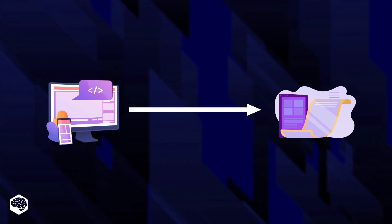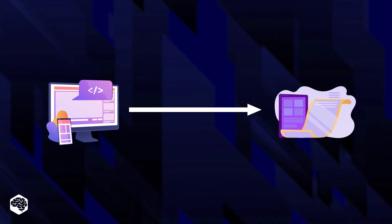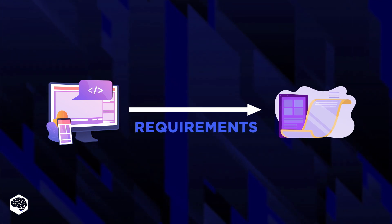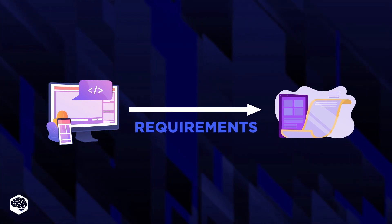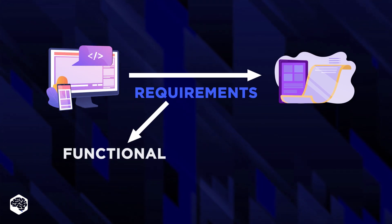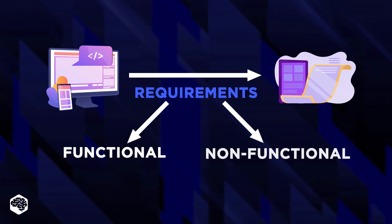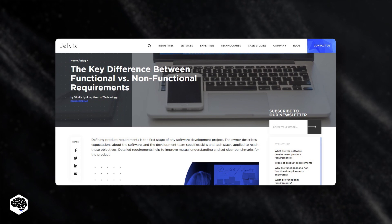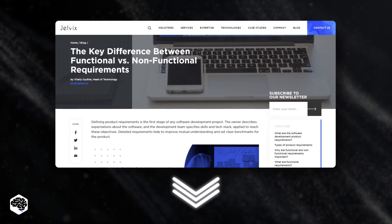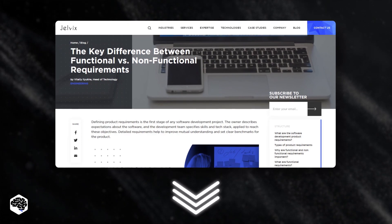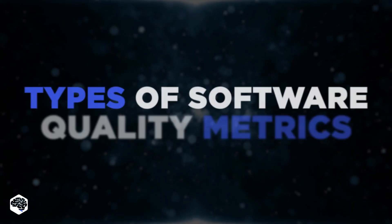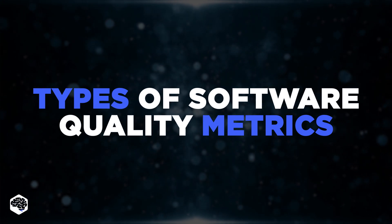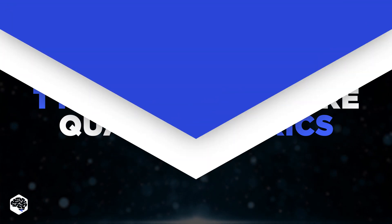We need to measure quality to check if the software solution satisfies its requirements. The requirements can be classified as functional or non-functional. Read our comparison of functional versus non-functional requirements for more details — the link is in the description box. Let's now review the major types of software quality metrics.